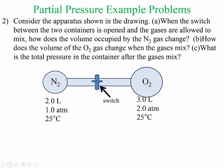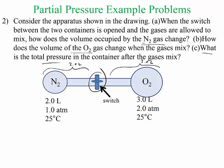Consider the apparatus shown in the drawing. When the switch between the containers is opened, the gases are allowed to mix. How does the volume change for N2? How does the volume of O2 change, and then what is the total pressure in the container? So when this is opened, this portion right here is 2.0 liters and this portion right here is 3.0 liters. So what would the new volumes be for N2 and O2?